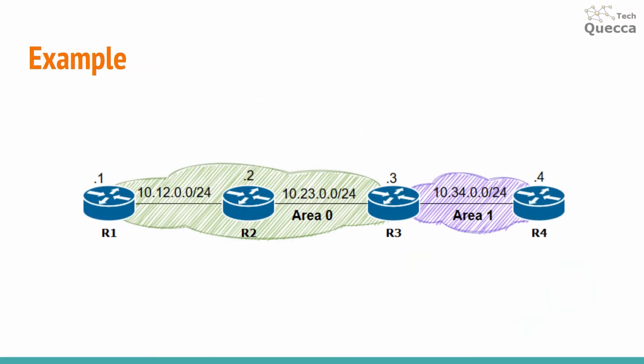To summarize all the information discussed in this topic, I would like to review a small configuration example. For this example, I'm going to use a topology with four routers and two OSPF areas: area 0 and area 1. I'll demonstrate OSPF cost configuration on the interface as well as the configuration of the default reference bandwidth.